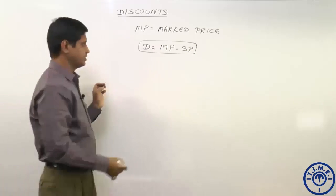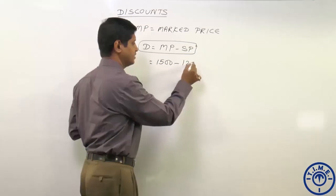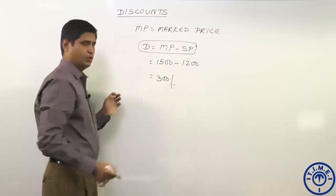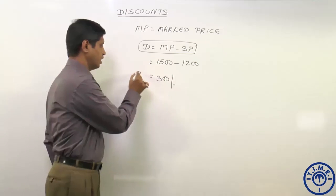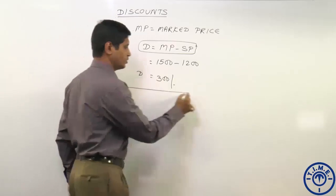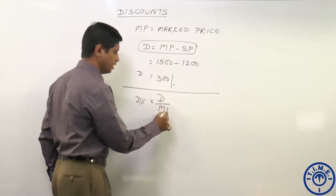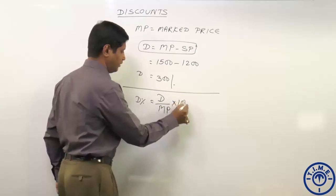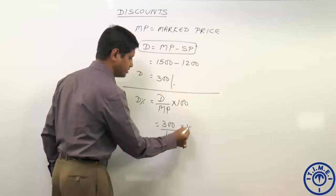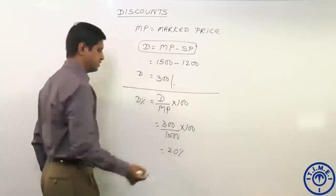For example, let us take the marked price of the article as 1500 and the selling price as 1200. The difference between these two values is 300 rupees, so 300 is the discount. What is the percentage of discount? Percentage of discount means discount divided by marked price, multiplied by 100. Here, the value of discount is 300 and the marked price is 1500, so 300 by 1500 into 100 simplifies to 20 percent. This is the percentage of discount.